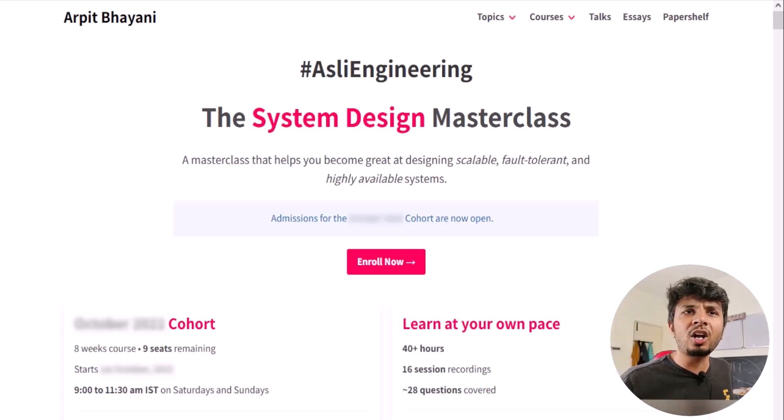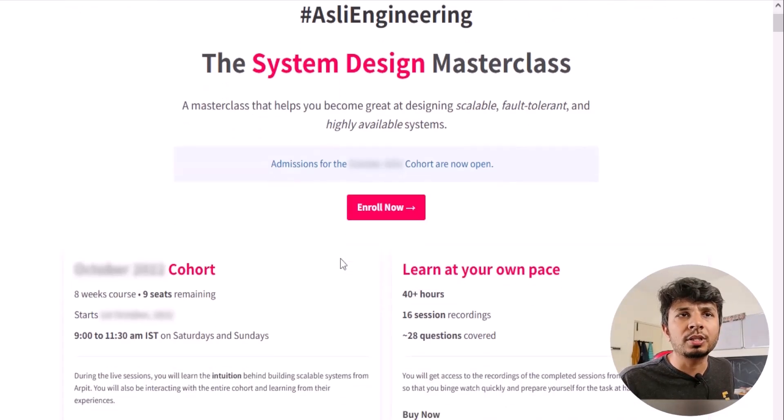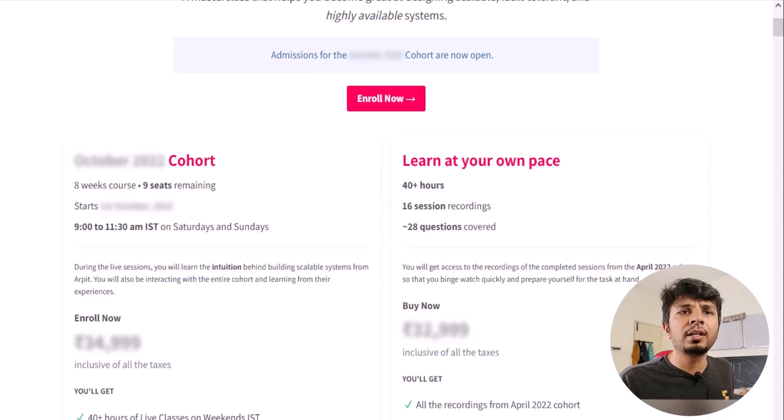We cover topics ranging from real-time text communication for Slack to designing our own load balancer to cricket's live text commentary to doing impressions counting at scale. In all we would be covering roughly 28 systems and the detailed curriculum split week by week can be found in the course page linked in the description below.